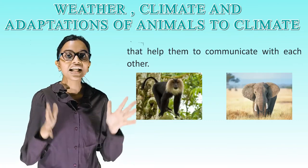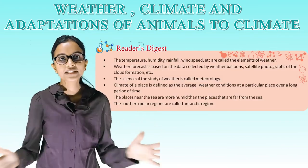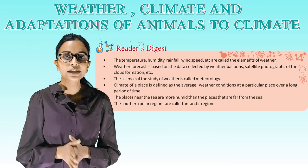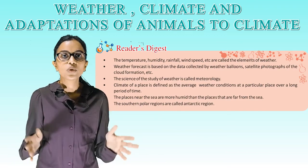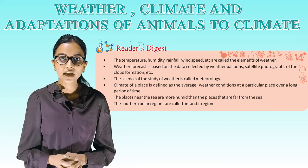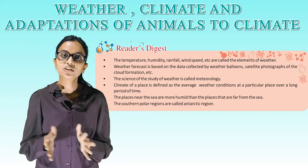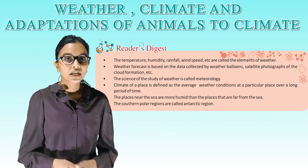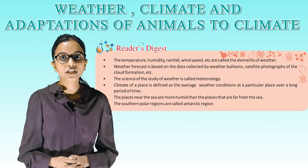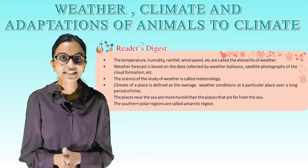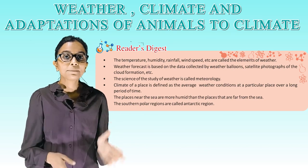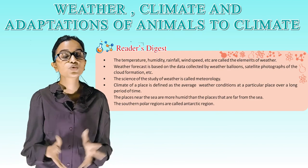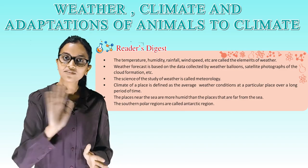Reader's digest: temperature, humidity, rainfall, wind speed etc. are called the elements of weather. Weather forecast is based on data collected by weather balloons, satellites and photographs of cloud formation. The science of the study of weather is called meteorology. Climate of a place is defined as the average weather conditions at a particular place over a long period of time. Places near the sea are more humid than places far from the sea. The southern polar regions are called Antarctic regions. Students, it's time to take your leave — bye, we'll meet in the next class.